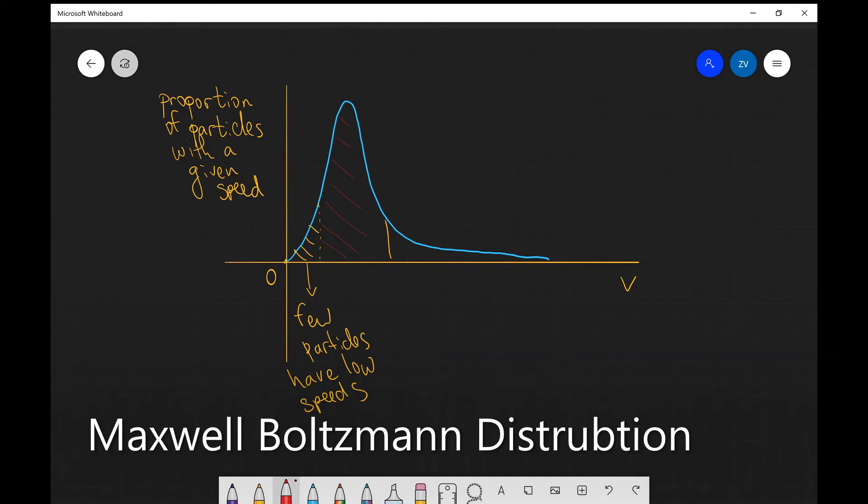So the most number of particles that there are in a gas, most particles will have moderate speeds.